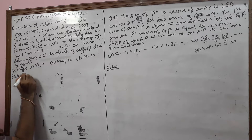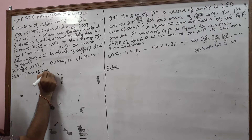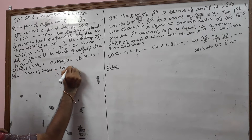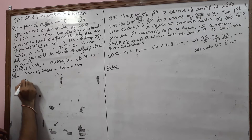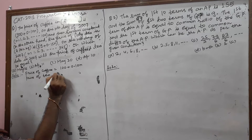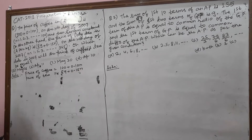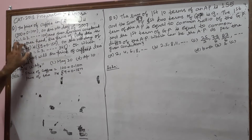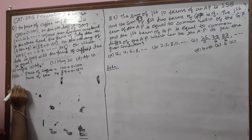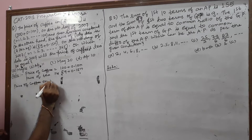On which day of 2007 will the price of coffee and tea be equal? The price of coffee is given as (100 + 0.10N), and in terms of coffee, the value of N is 1 up to 100. So the price of coffee on day 100: